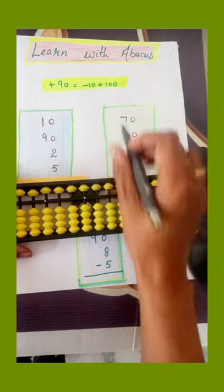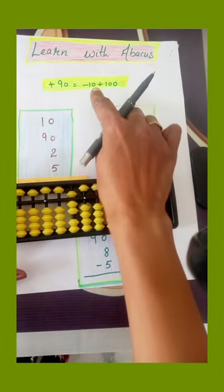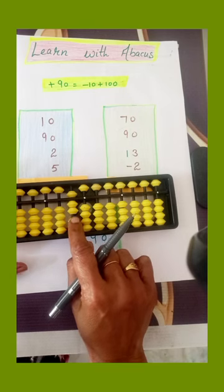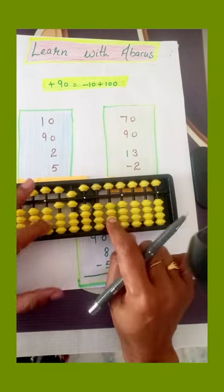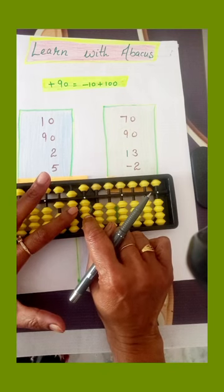Next question: 70 plus 90. For 90, we will again apply the formula because we have only 20 on this row. Plus 100 minus 10. Now add 1, 3, 13. This is 1 on the tens row, 3 on the ones row.